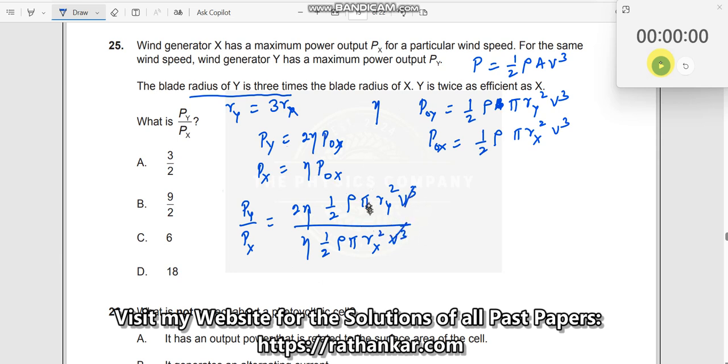So V cubed goes away, pi goes away, rho goes away, half goes away, eta goes away. What am I left with? I'm left only with 2 in the numerator and then RY squared divided by RX squared.